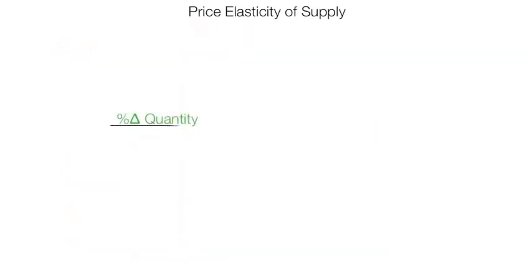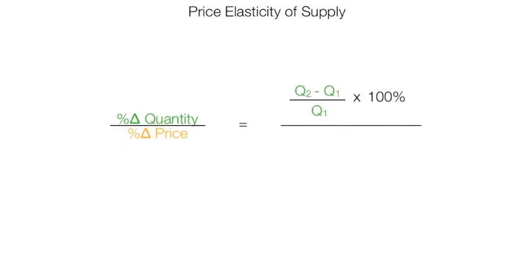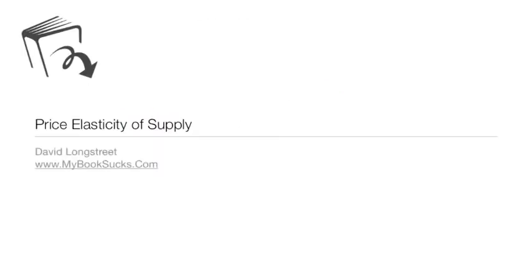The official formula for price elasticity of supply is percentage change in quantity divided by percentage change in price. Your textbook probably has a formula like this, where it's Q2 minus Q1, where Q2 is the new quantity and Q1 is the old or initial quantity, over P2 minus P1 divided by P1. And that's been price elasticity of supply. Good luck in your classes.